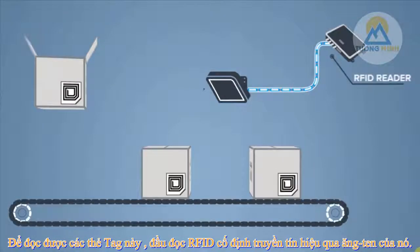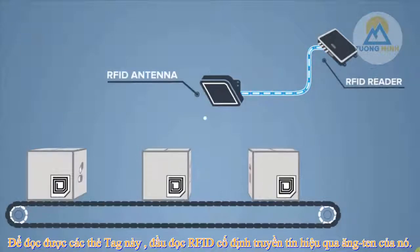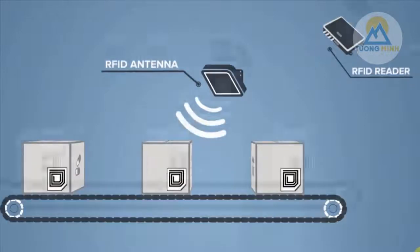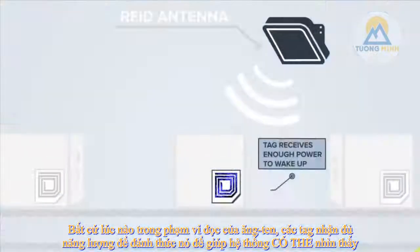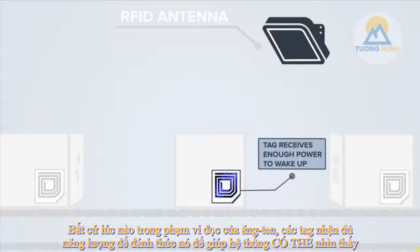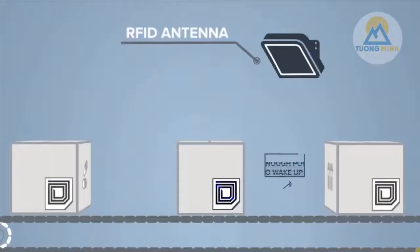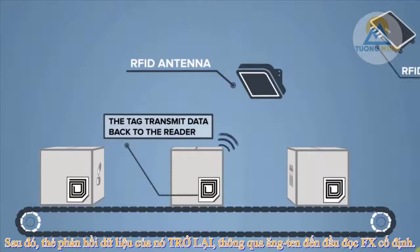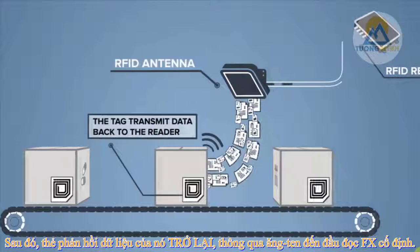To read the tag, the RFID reader transmits power through its antenna. Any tag within the antenna's read range receives enough power to wake it up so that it is visible to the system. Then, the tag transmits its data back through the antenna to the reader.